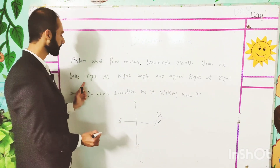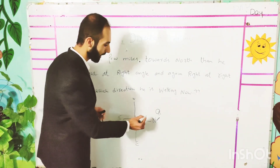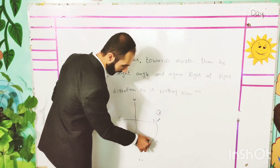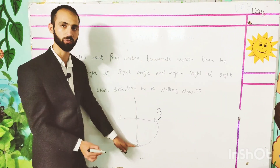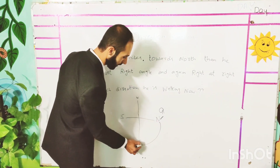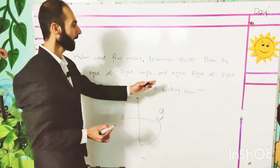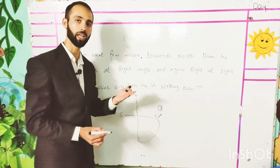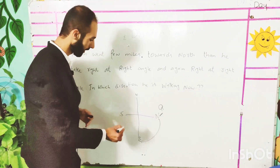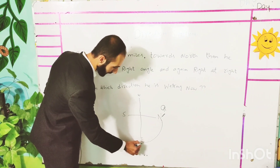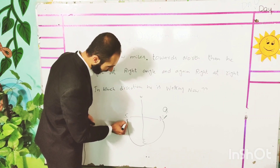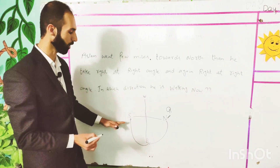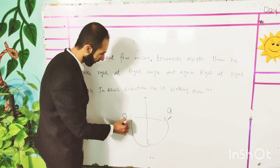Then he took right at right angle. When he turned right at right angle, he moved to the east — because this is right at right angle, so this is east. And again, right at right angle. When he moved right at right angle once again, where is he? South.